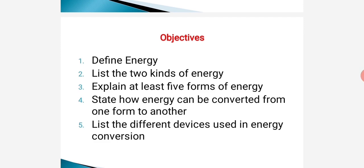By the end of this lesson, you should be able to: 1. Define energy. 2. List the two kinds of energy. 3. Explain at least five forms of energy. 4. State how energy can be converted from one form to another. 5. List the different devices used in energy conversion.